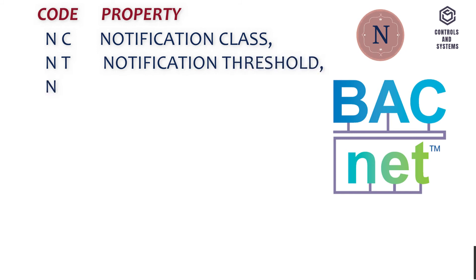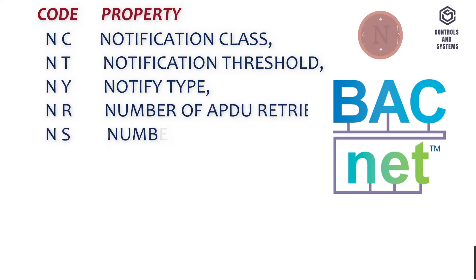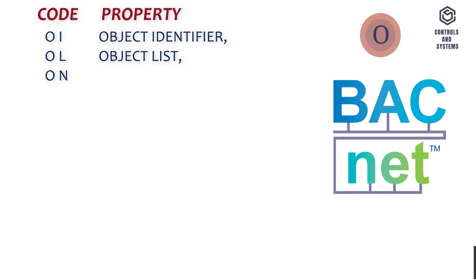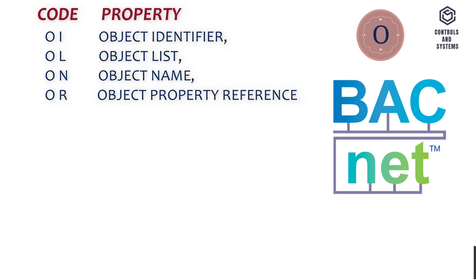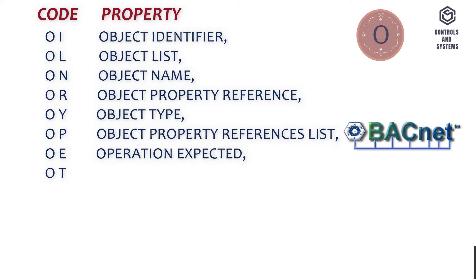C-M-N-Y - Notification Threshold, C-M-N-R - Notify Type, C-M-N-S - Number Of APDU Retries, C-M-O-I - Number Of States, C-M-O-L - Object Identifier, C-M-O-N - Object List, C-M-O-R - Object Name, C-M-O-Y - Object Property Reference, C-M-O-P - Object Type, C-M-O-E - Object Property References List, C-M-O-T - Operation Expected.